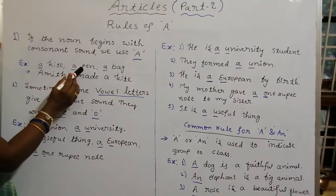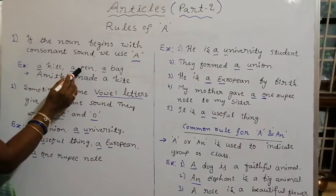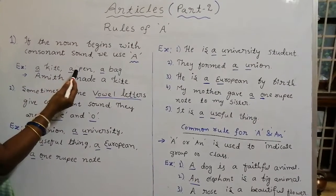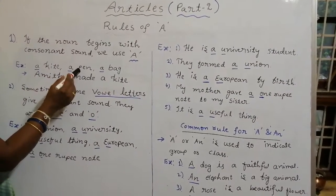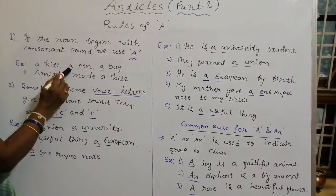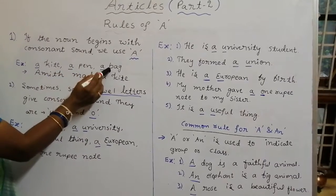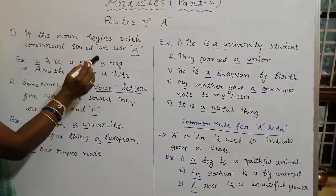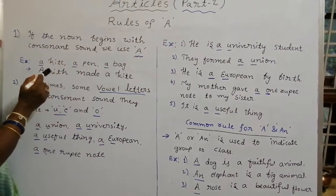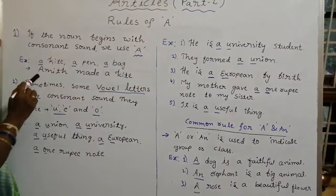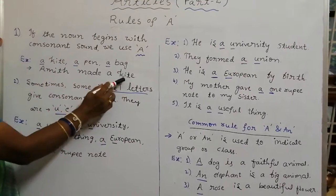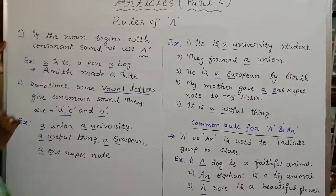And here you see 'pen' — what is that sound? 'Pa.' That's why we have to use A. And here you see 'bag' — 'ba,' that's why we have to use A. I gave one example: Amit made a kite.